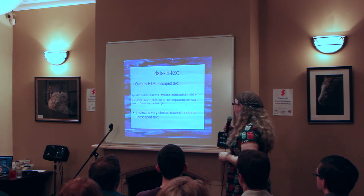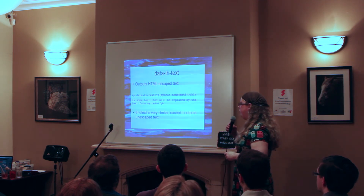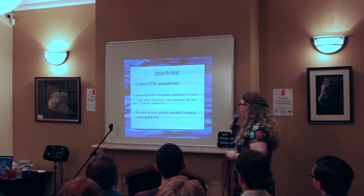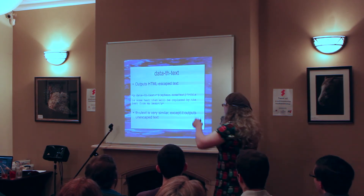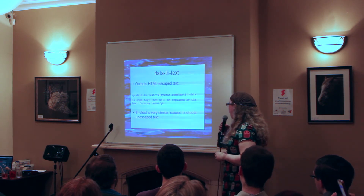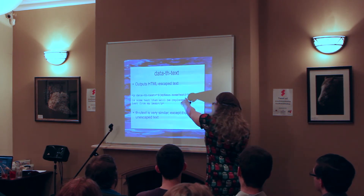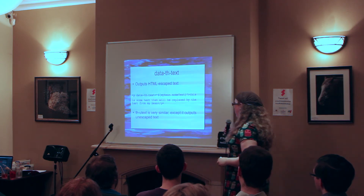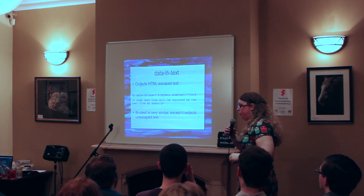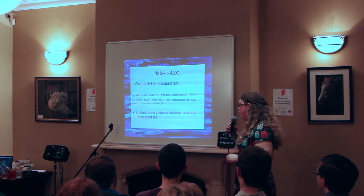And then data-th-text — that's where you want to output HTML-escaped text. So it'll do things like if it's got an ampersand, it'll change that to &amp;. Again, you can put dummy text in as an HTML developer, like lorem ipsum text, just to see how it will look. Then when you run it in the Java web app, it will replace that with the contents of that variable from your bean. And th-utext is very similar except that it outputs unescaped text. So you'd use that, for example, if you've got some HTML-formatted rich text from a CMS that you just want to output as is.